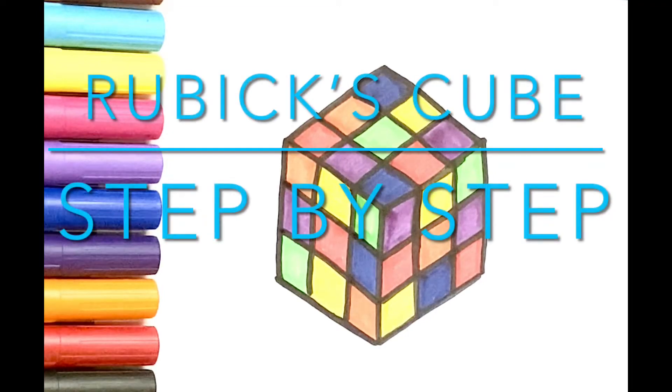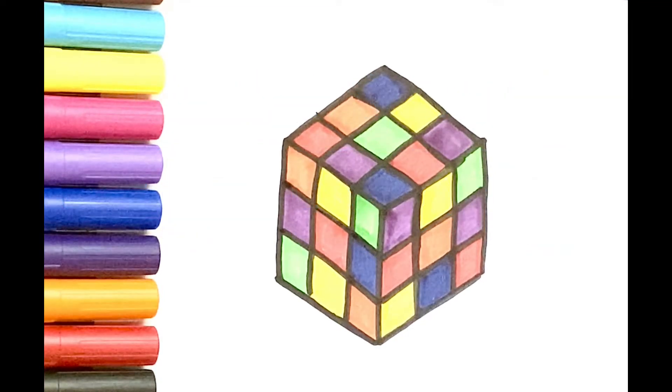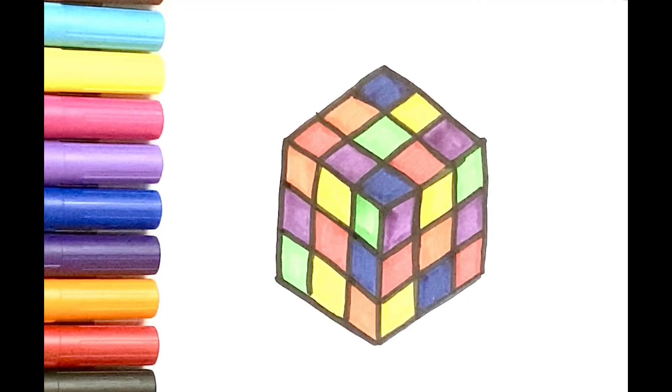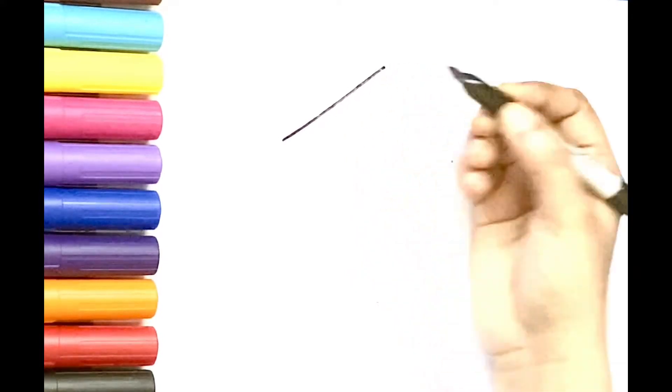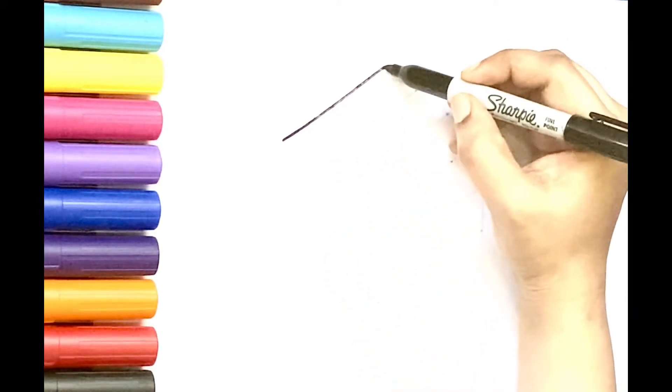Hello kids, today we are going to draw and color a Rubik's cube by using diamond shape and lines. Let's start. First step is to draw a diamond shape using slanted lines.